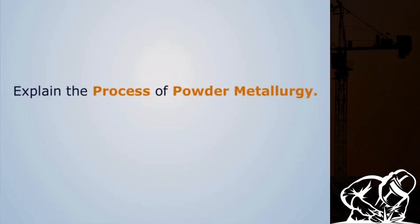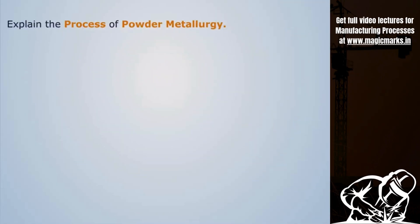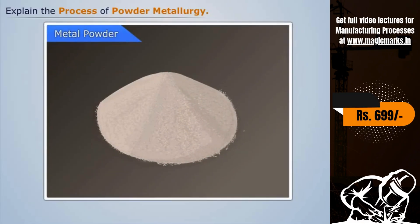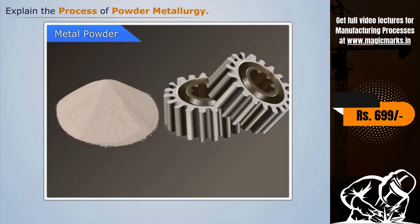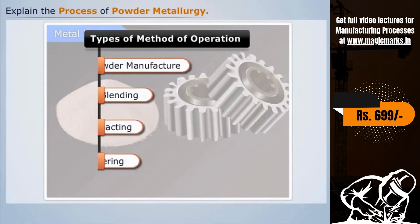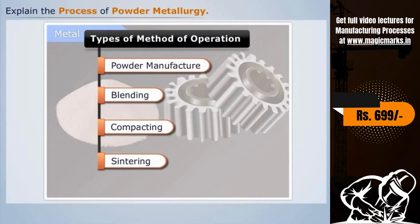Explain the process of powder metallurgy. Powder metallurgy is a process of producing components with the help of processing powdered iron and non-ferrous metals. Let us see the various steps involved in this process. Let us produce a finished product gear as shown in the figure with the help of the powder metallurgy process.